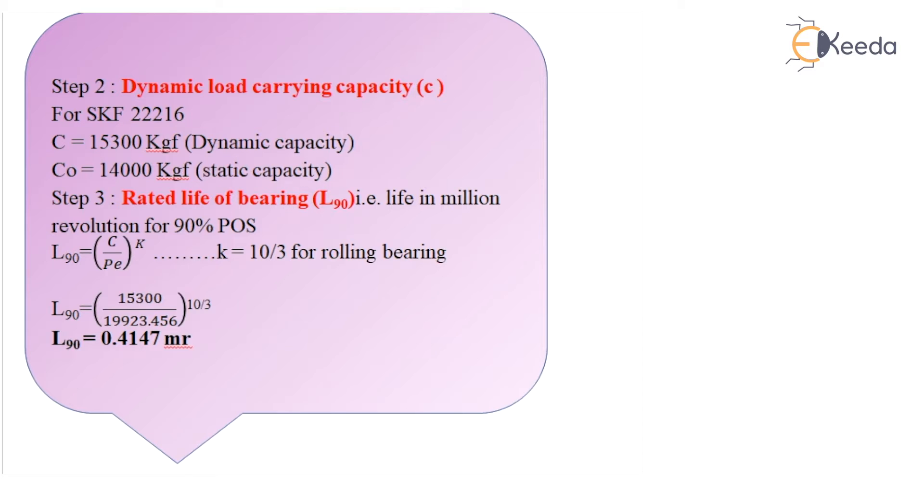To find the rated life of bearing, that is L90, for 90% probability of survival, I have the formula L90 is equal to (C/Pe)^k. The value of k is equal to 10/3 for rolling contact bearing. So if I substitute the value of C and Pe, I get the value of L90 as 0.4147 million revolutions.